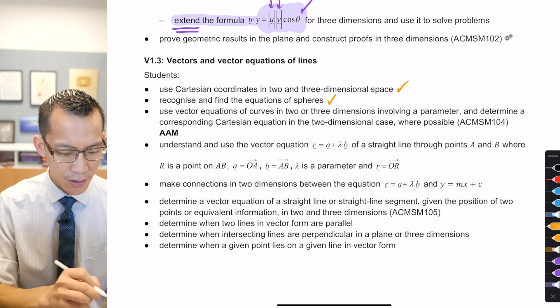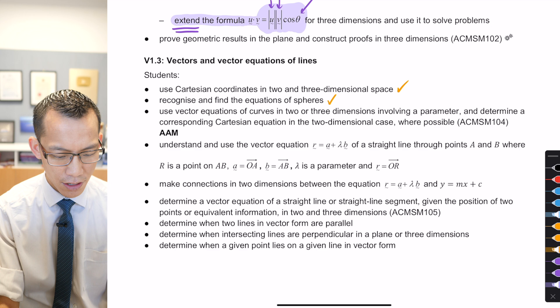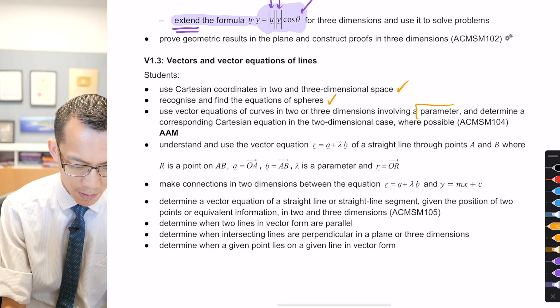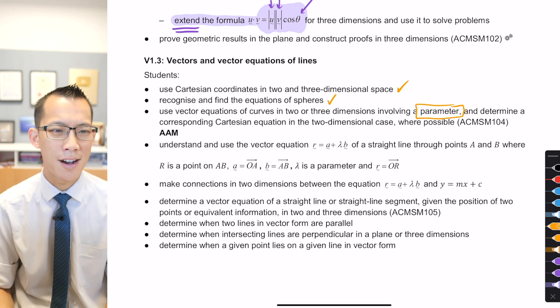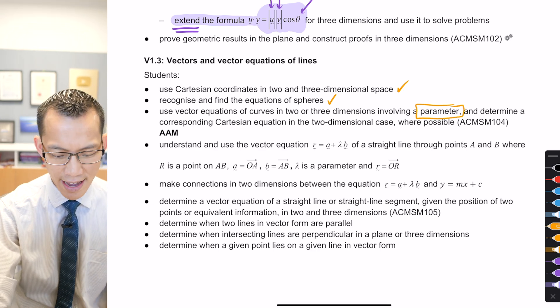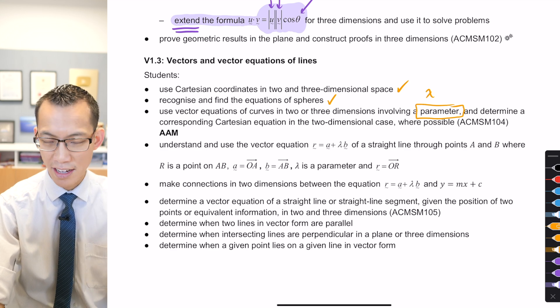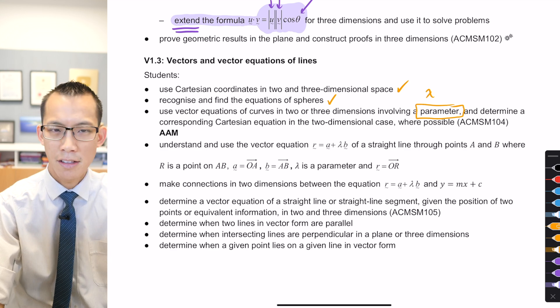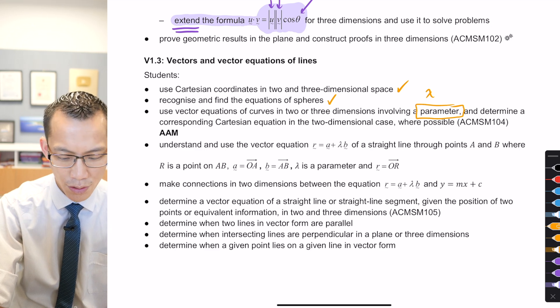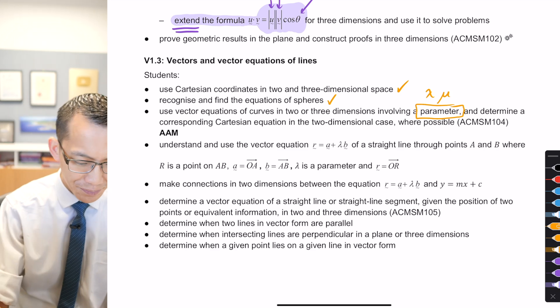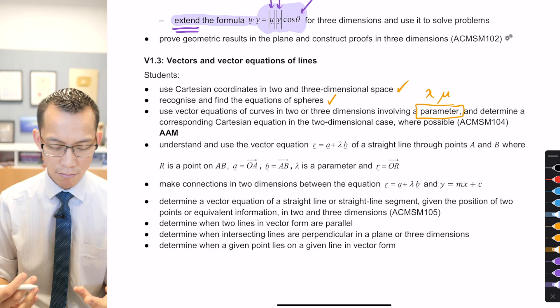We've used vector equations of curves in two or three dimensions involving a parameter. Do you remember what's the usual symbol we've been putting on our parameter so far? Lambda. Yeah, it tends to be lambda. Occasionally when we have a question that requires a second parameter, like there's another line and it has a different parameter, we might use mu, but really it doesn't matter. These are just conventions.